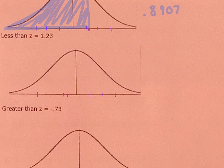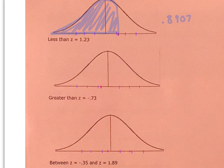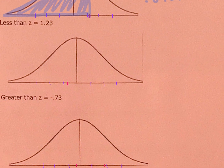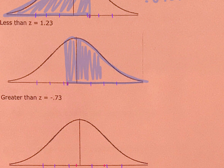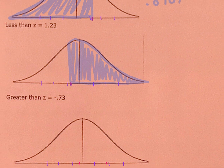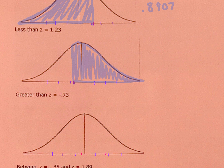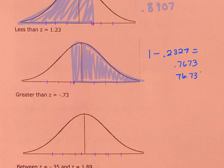For the next example: greater than negative 0.73. I've drawn approximately where that is on the distribution, but because it's a greater than question, we need all of the area above that value. So we go to the table at negative 0.73, find 0.2327, and then compute 1 minus 0.2327, giving 0.7673 or 76.73%.